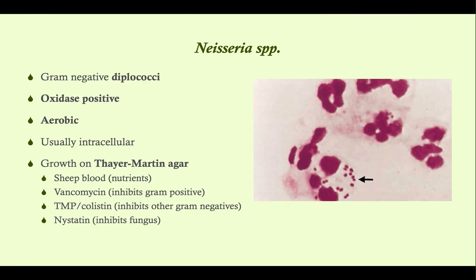The Neisseria species have in common that they are gram-negative diplococci — meaning there are two round organisms basically attached to one another. You can see pairs of pinkish organisms, and oftentimes you're going to find these inside cells. You don't need to distinguish on the microscope between Neisseria meningitidis and Neisseria gonorrhea because the disease processes are completely different, so you'll be given a vignette that makes it abundantly clear which you're dealing with.